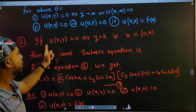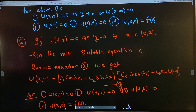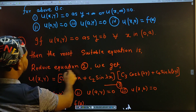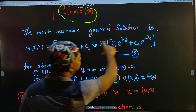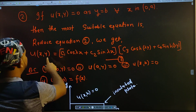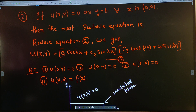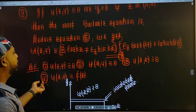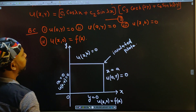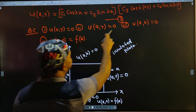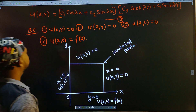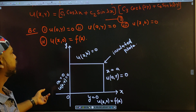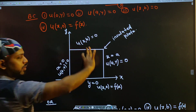Now, if u(x, y) = 0 as y = b, for all x in (0, a), then the most suitable equation is the reduced equation. u(x, y) = (c₁ cos λx + c₂ sin λx)(c₃ cosh λy + c₄ sinh λy). The boundary conditions for this are: u(0, y) = 0, u(a, y) = 0, u(x, b) = 0, and u(x, 0) = f(x).